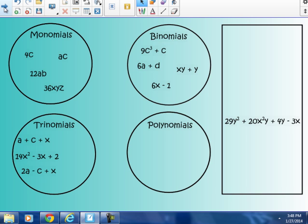And the only polynomial, one that has more than three unlike terms in it, is this one that's left here. It has four unlike terms. And we'll talk a little bit more about like and unlike terms.